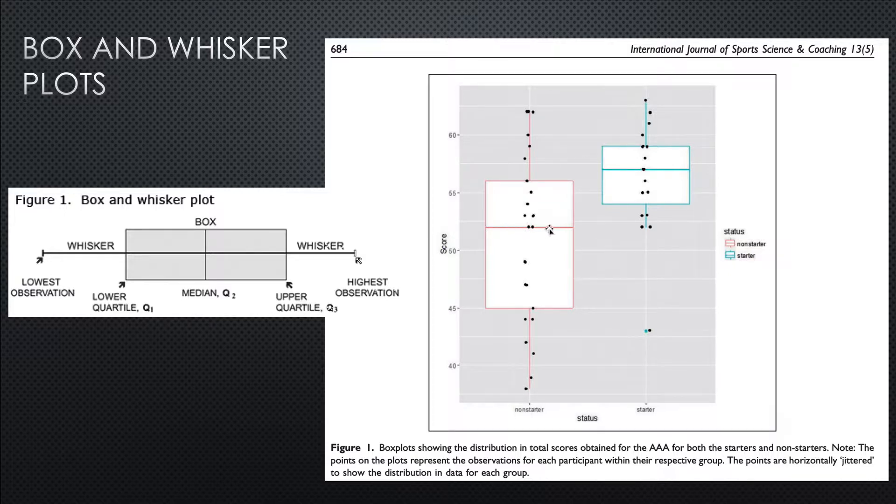So half of the non-starters scored 52, the middle score is 52, so half or above, half or below. 25% of the non-starters fell in this box, 25% fell in this box.